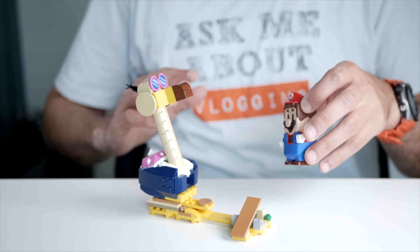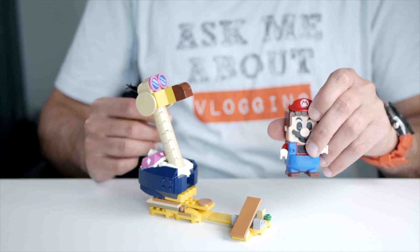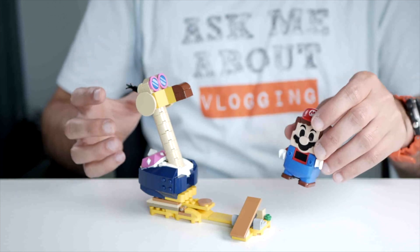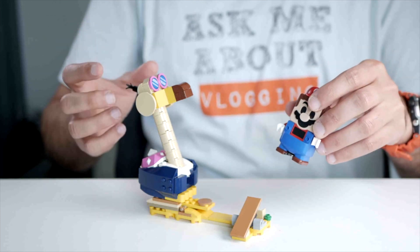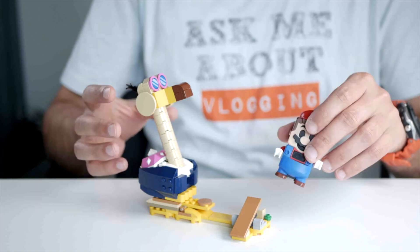This Conkdor's Noggin Bopper is a really fun set to add to your Lego Mario collection because it's fun and colorful and it's a nice extra hazard for Mario to come across.